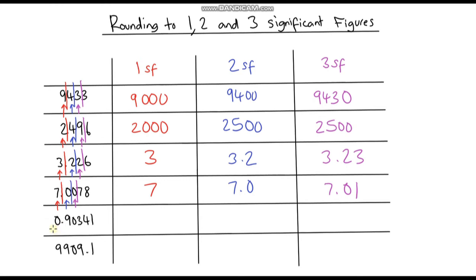The next example is where a few people may stumble. Our first significant figure is not the 0 — any leading zeros do not count as significant, as we recapped in the previous video. Our first significant figure is actually the 9. We look at the digit to the right of the 9: that is less than 5, so this stays at 9, giving 0.9. Many people would round that leading 0 up to a 1, but no — that first 0 is not significant. For two significant figures, the second significant figure gives us 0.90 — we need to include that extra 0. For three significant figures, the third significant figure gives us the 4, which is less than 5, so the answer is 0.903.